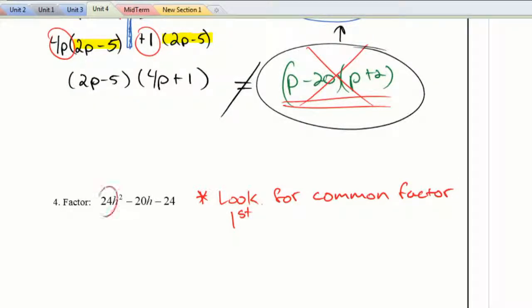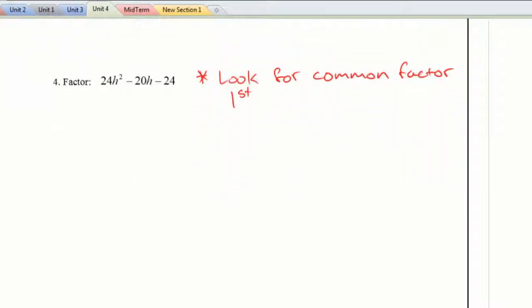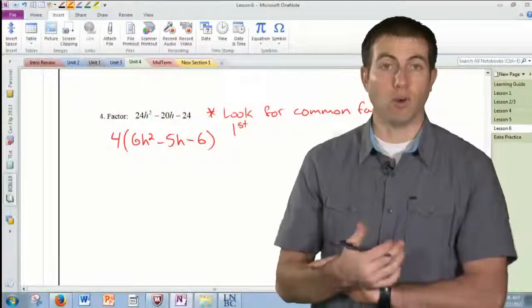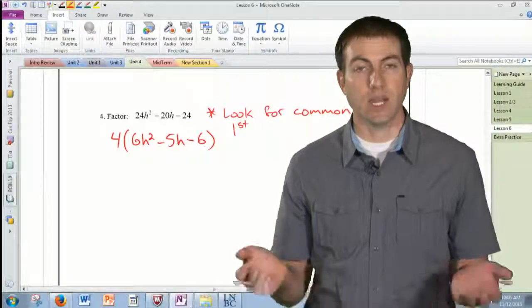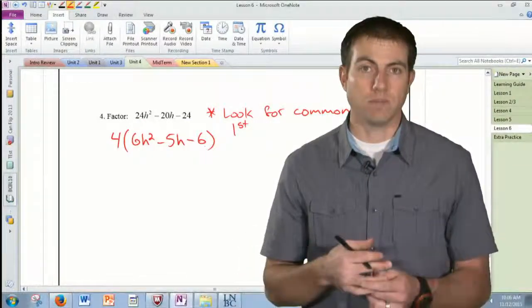If you took this 24, multiplied it by the 24, and did the AC method, you're going to get this big, monstrous number and try to factor it from there. It's just going to be a nightmare. So if there's anything common, pull it out. So what's common between 24, 20, and 24? The largest thing that's common there is going to be a 4. So 24 divided by 4 is 6. Negative 20 divided by 4 is 5. And 24 divided by 4 is going to give me 6 as well. So before I even factor, before I even do the AC method, before I even decompose my middle term, I've pulled out a 4 because it was common to all three terms. That's what factoring is. Is there anything common? Yeah. In this case, there's a 4.